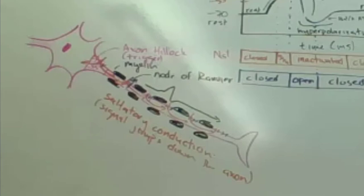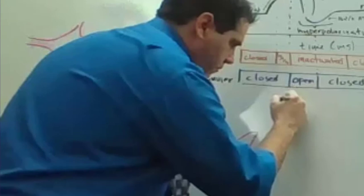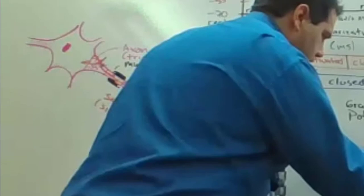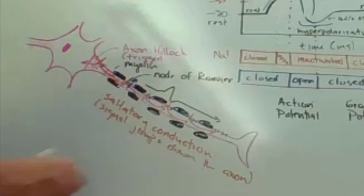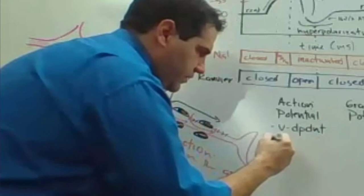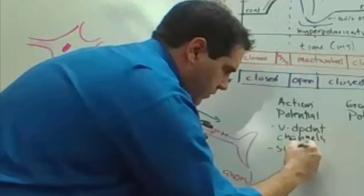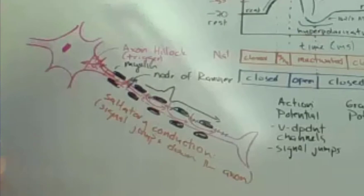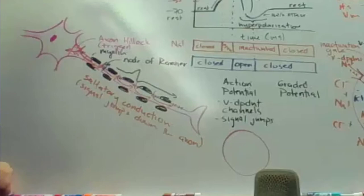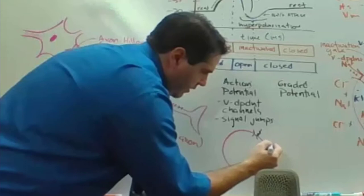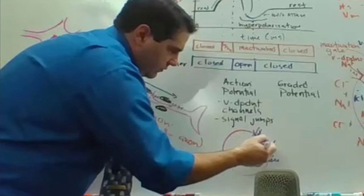That's called an action potential, and we differentiate it from a graded potential. An action potential has voltage-dependent channels and the signal jumps. A graded potential is where the signal just spreads — there are channels that let the signal come in and spread around with no boosting. Action potentials have boosters at each node; graded potentials dissipate.